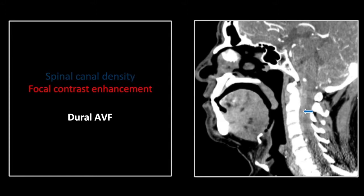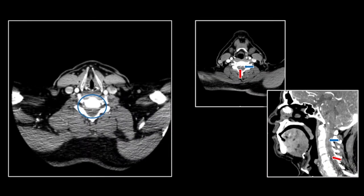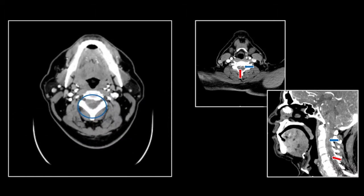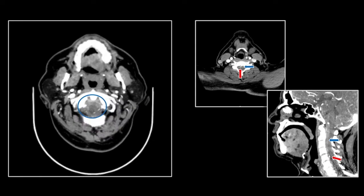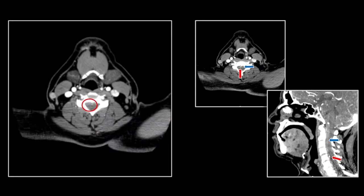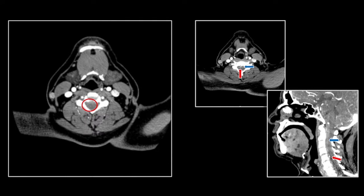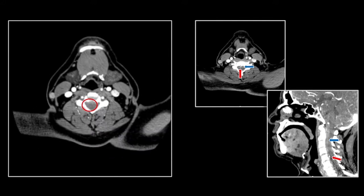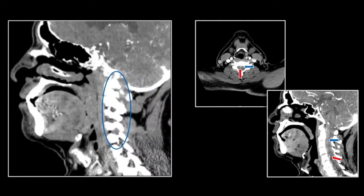Here it is on the sagittal. You can see the anterior density displacing the cord posteriorly, and here is that spot of increased density that represents the fistula. Appreciate the anterior density throughout the extent of the cervical spine going all the way up to the skull base. Let's look at that small dot of increased density and note the entering and exiting vessels — those are the feeding and draining vessels of this AVF.